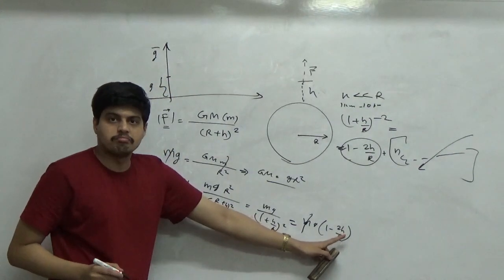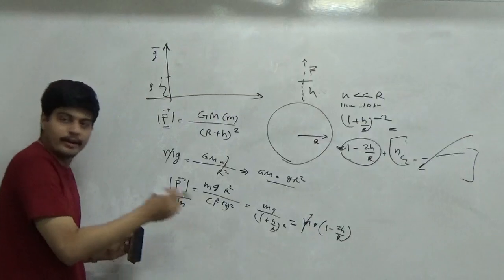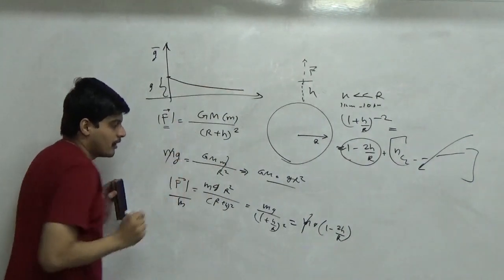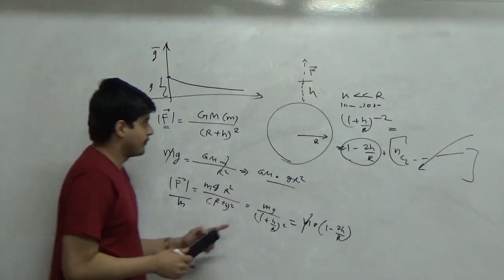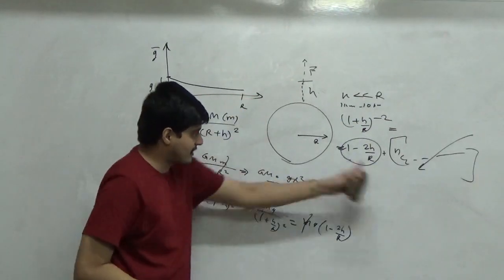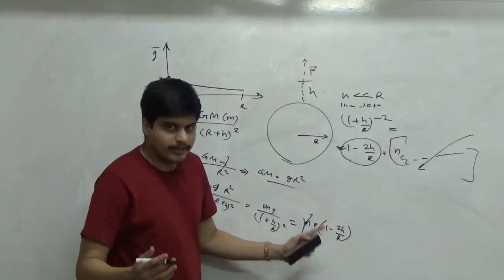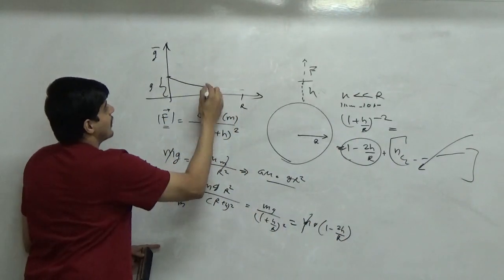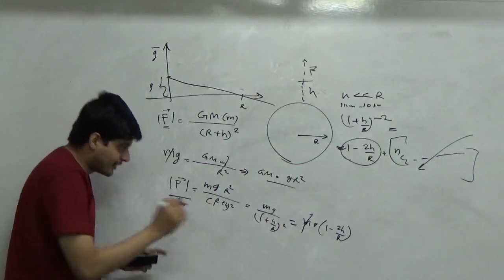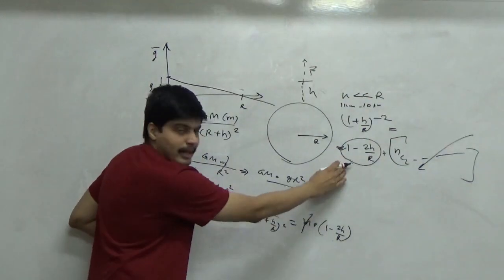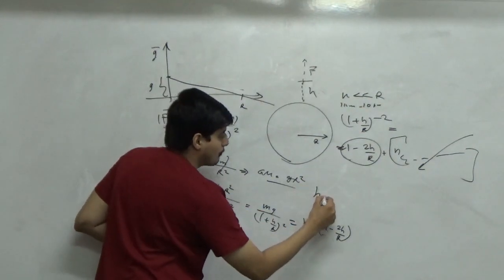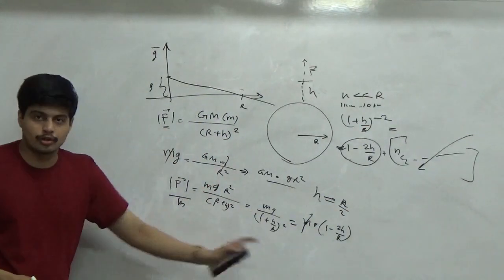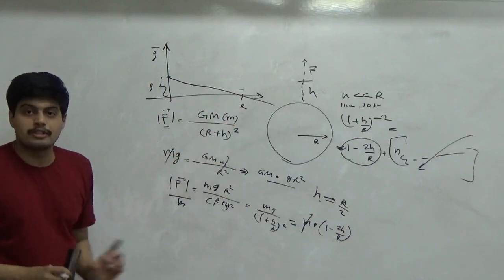Say h is equal to 0.1 of r, I get 0.2, so it is 0.8g. So it keeps dropping down. Imagine h tends to r - I cannot plot it here because this assumption falls apart. But hypothetically, if h becomes r, then this becomes negative. So it has to break down from here. This also tells me that this equation approximation is valid up till h equal to r by 2. Beyond that I cannot use it. So this is approximately the plot.